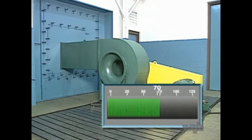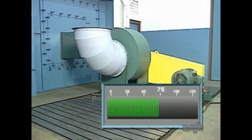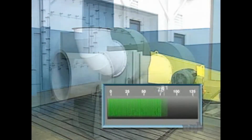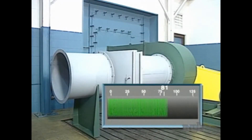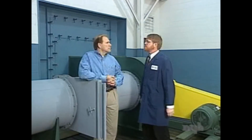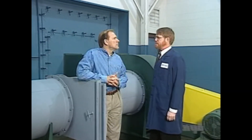Here's a fan operating with an open inlet. Air enters the fan smoothly and the fan wheel is loaded uniformly. Now we've modified the inlet condition with an abrupt 90-degree inlet — you can hear the difference. The abrupt inlet is causing the air to separate and become turbulent as it enters the fan. In this example, we've modified the fan with another poor inlet condition: a typical blast gate. Again, you can hear the difference. These are just two examples of increased sound levels created by system effects.